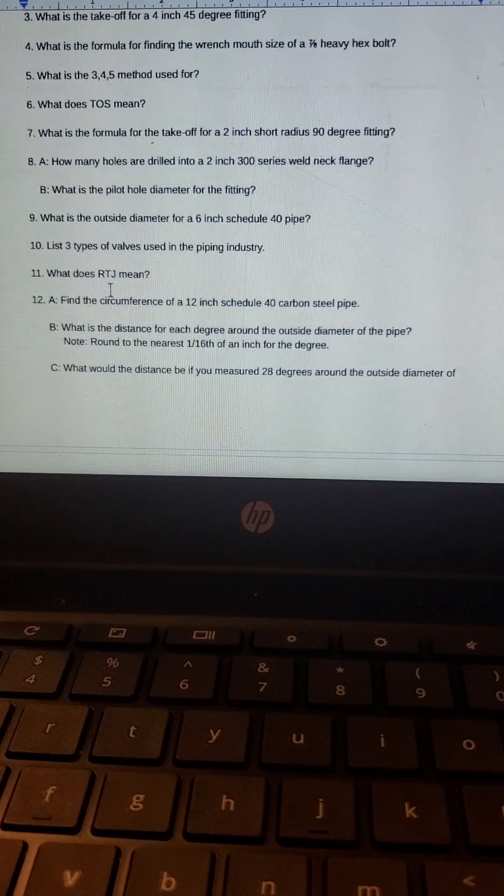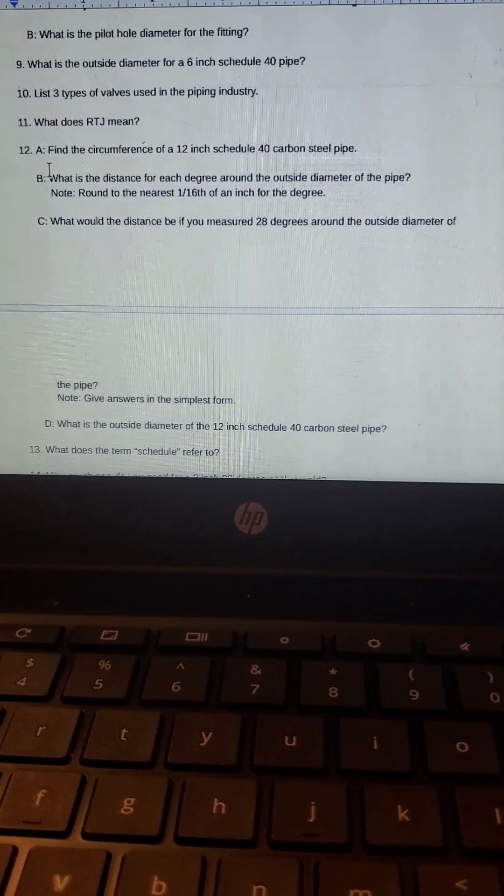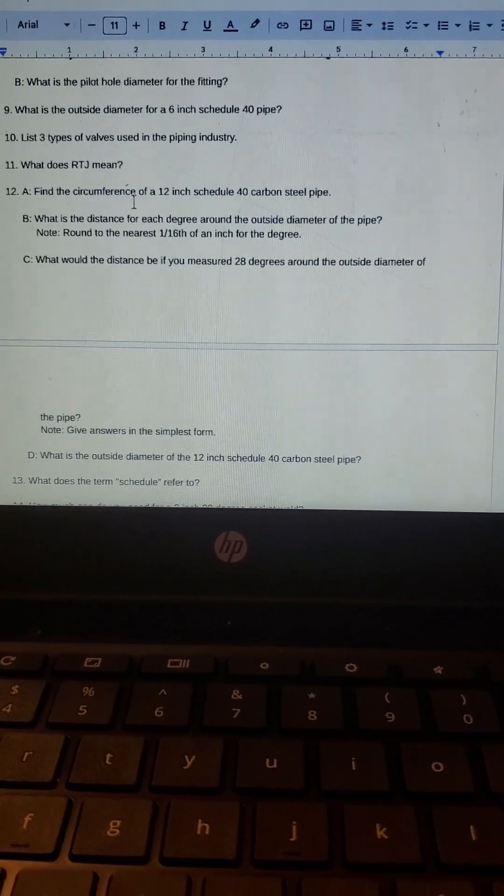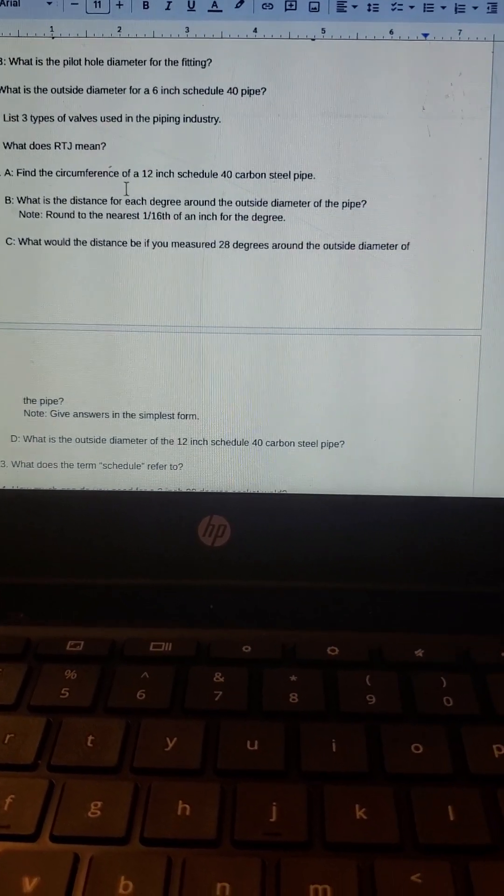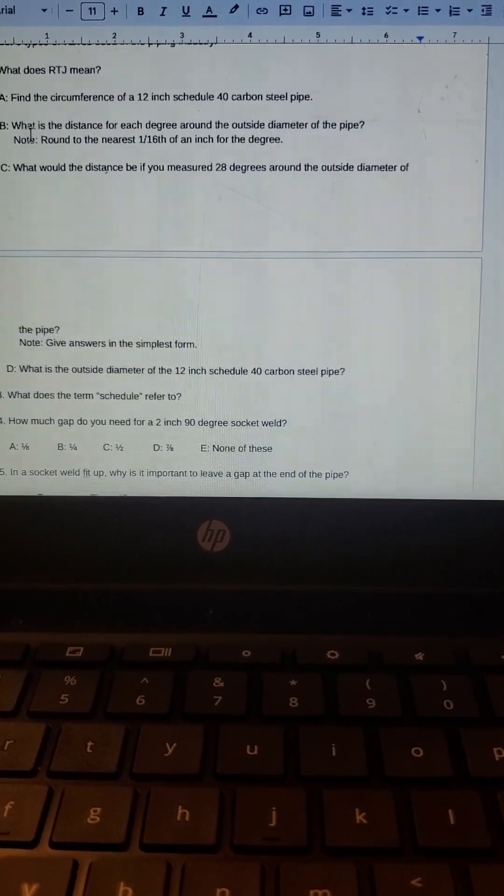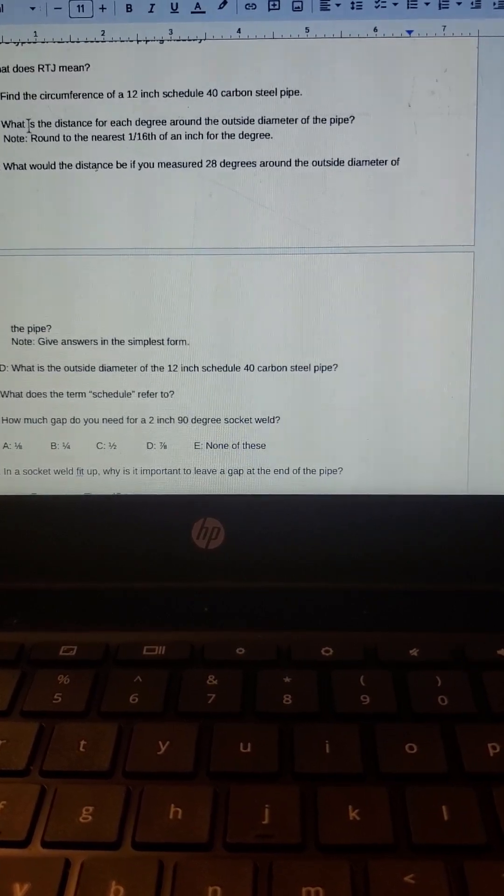RTJ, what does that mean? It's a ring type joint, that's the type of gasket that we use. Find the circumference of a 12 inch schedule 40? Their circumference, I believe that is a 40 and a 16th on that one.